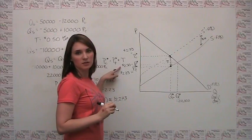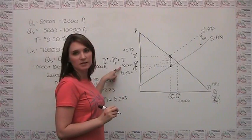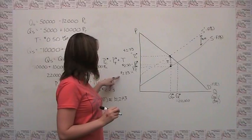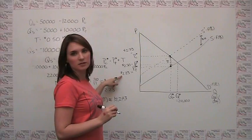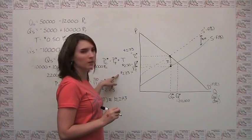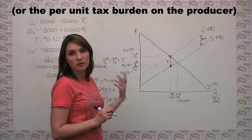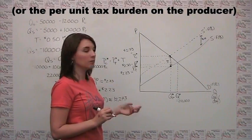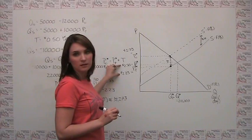We'll notice here that the producer used to get $2.50 for its gallon of gasoline, and now it only gets to keep $2.23. So we can say that the tax incidence on the producer is $0.27 per gallon, because that's the difference between these two prices.